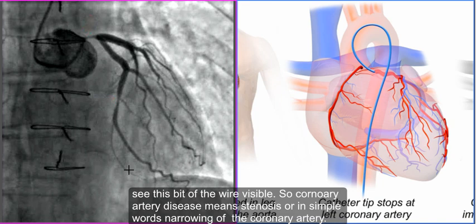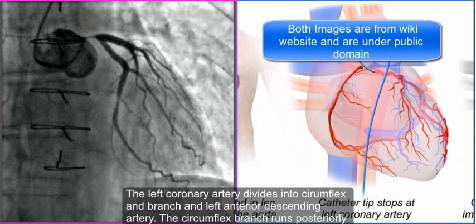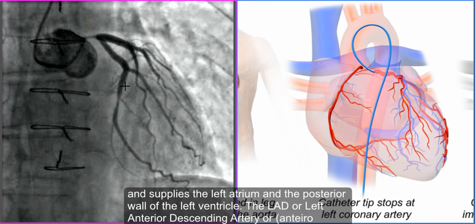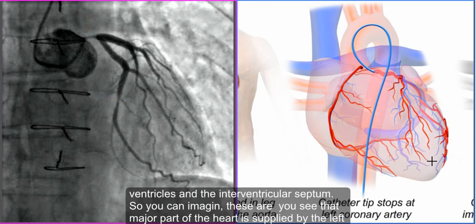The left coronary artery divides into the circumflex and the left anterior descending artery. The circumflex branch runs posteriorly and supplies the left atrium and the posterior wall of the left ventricle. The left anterior descending artery — also known as the anterior interventricular branch — travels towards the apex of the heart and supplies the anterior wall of both ventricles and the interventricular septum. So you can imagine that a very large, major part of the heart is supplied by the left main coronary artery.